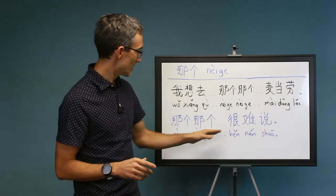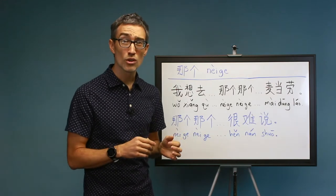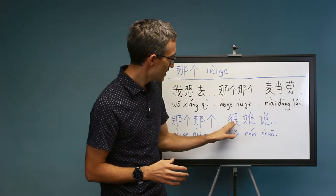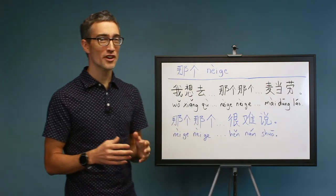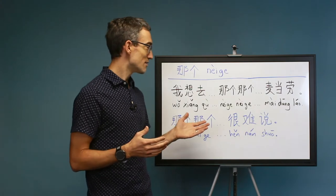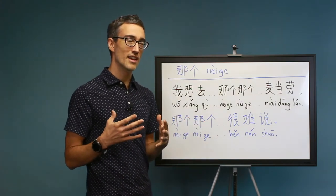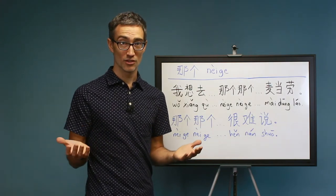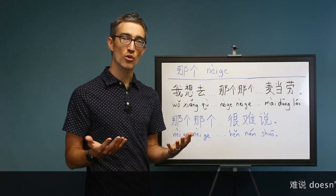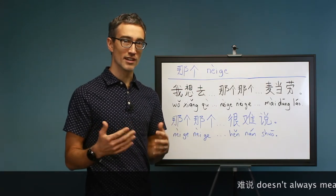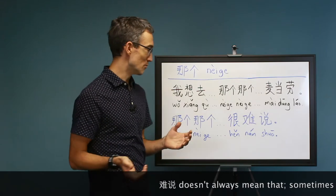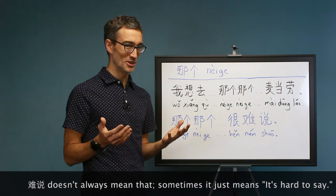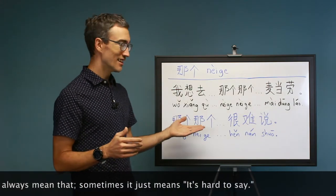Here it's in the beginning of the sentence. Nega nega hen nan shuo. Hen nan shuo means very difficult to say. This is a very common Chinese phrase. It's what Chinese people often say when they don't want to answer a question, but they want to be more polite than saying I don't want to tell you. So it's kind of code, an indirect way of saying I don't want to talk about it.